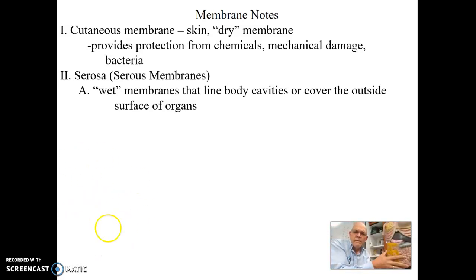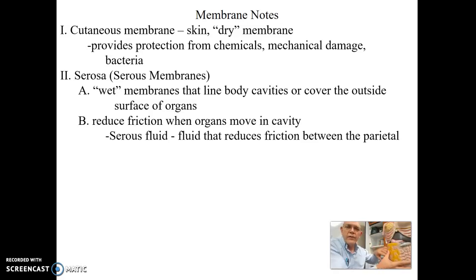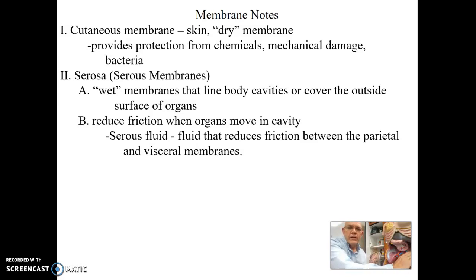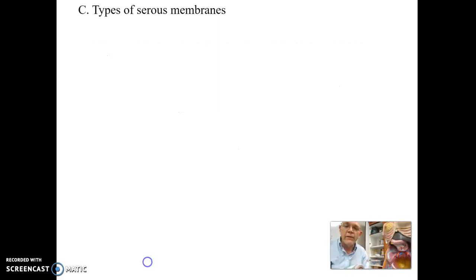The job of serous membranes is to reduce friction between organs in the body cavity as they move against each other and the wall. A fluid is secreted that keeps everything moist and lubricated, reducing friction between the parietal membrane lining the wall and the visceral membranes on the organs, as well as between adjacent organs — preventing them from sticking or catching on each other.